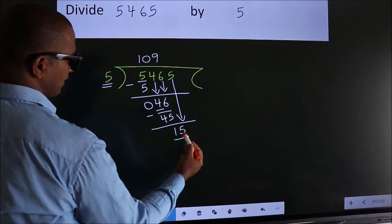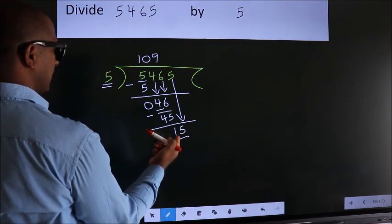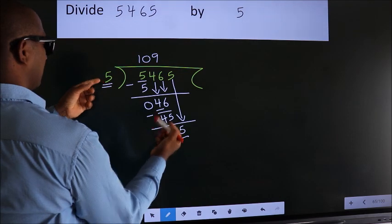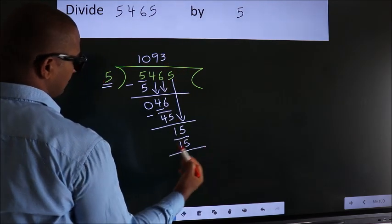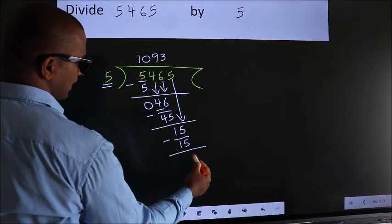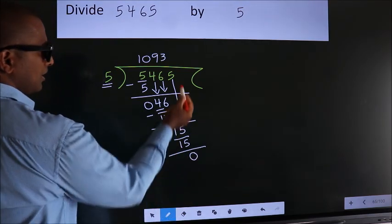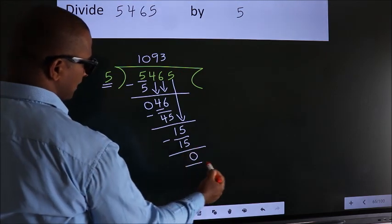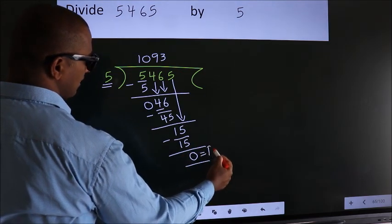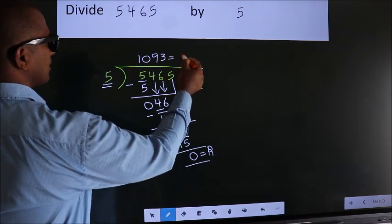So, 15. When do we get 15? In 5 table. 5 threes, 15. Now we subtract. We get 0. No more numbers to bring it down. So, we stop here. This is our remainder. This is our quotient.